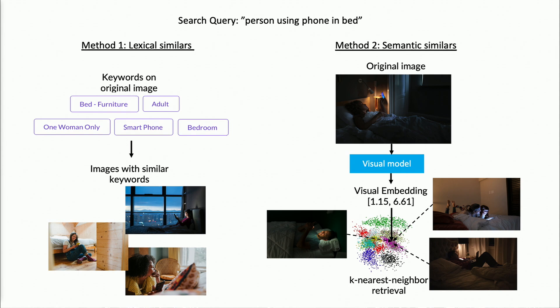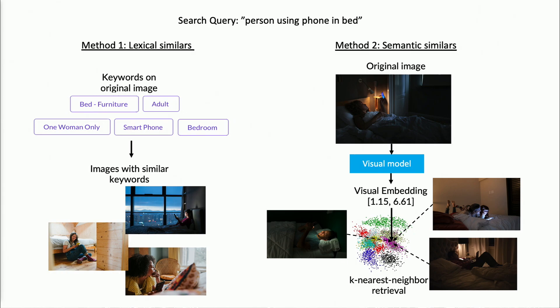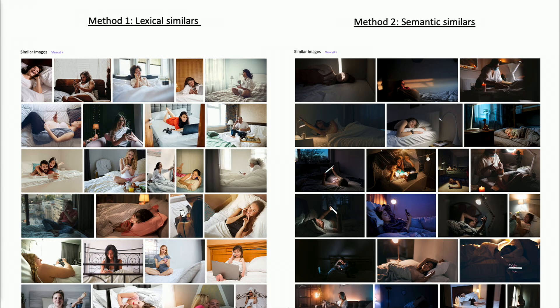Method two is semantic similars. We pass the image through a visual model to get a visual embedding representing the image, then use k-nearest neighbor to find other images with similar visual embeddings. The retrieved images look visually similar to the target, but we're losing precision in a less consistent way — some images might show more than one person, or show a laptop next to a phone instead of someone using their phone. Sometimes when making machine learning decisions, we're altering the user experience. The results on the right are more visually cohesive but effectively narrow and shift the user's search in two different ways. Therefore, in the planning stage it's very important to work closely with product teams to anticipate the expected outcome and choose a modeling approach that aligns with the user problem.